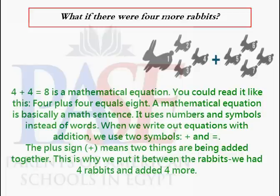The plus sign means two things are being added together. This is why we put it between the numbers — we had four rabbits and added four more.